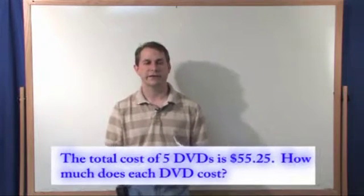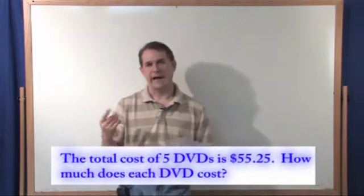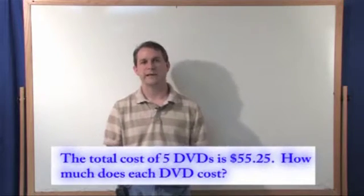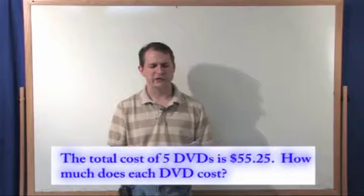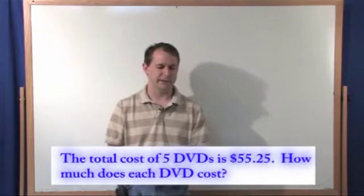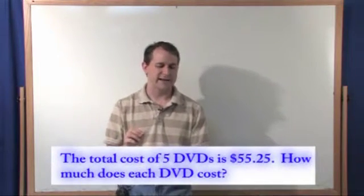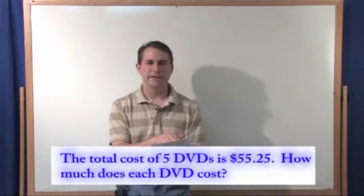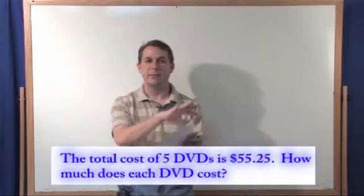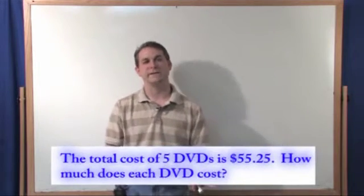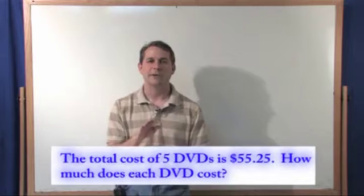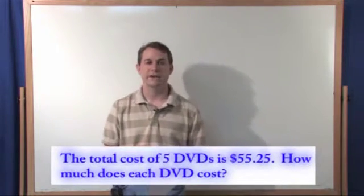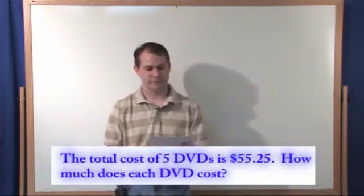When you're working these problems, you need to start asking yourself: do I need to add these things together, subtract them, multiply them, divide them? What do I need to do? In this case, it's not asking you to add up anything. It's asking you, if you have this much money and that represents the total cost of all of these DVDs and you're buying five of them, how much does each one cost? So that means you must divide by the number of things you're trying to buy to find out how much each one costs.